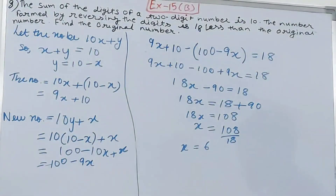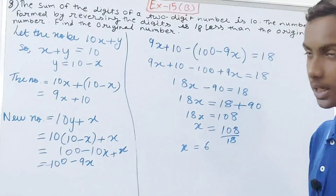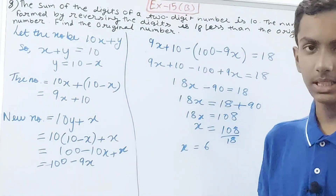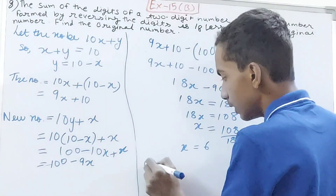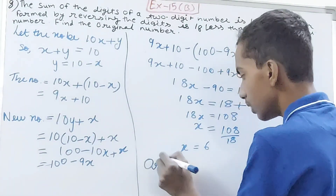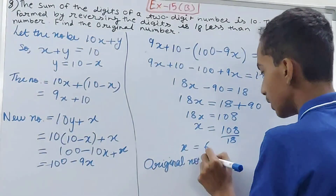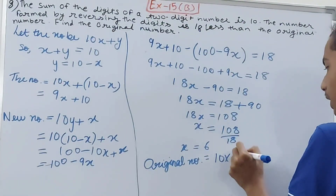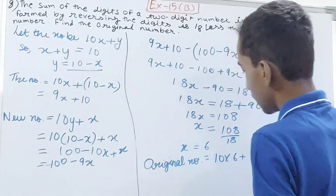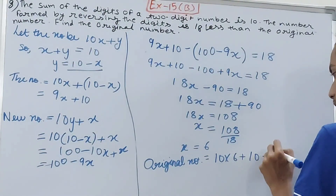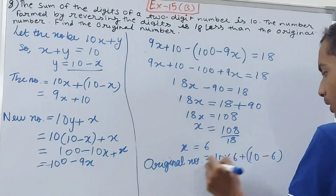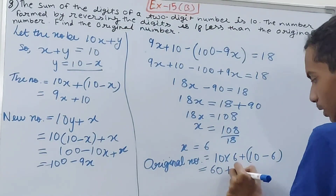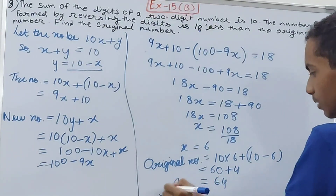Now that x = 6, we find the original number. The original number is 10x + y = 10(6) + (10 − 6) = 60 + 4 = 64. So the original number is 64.